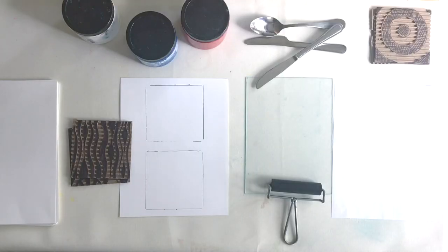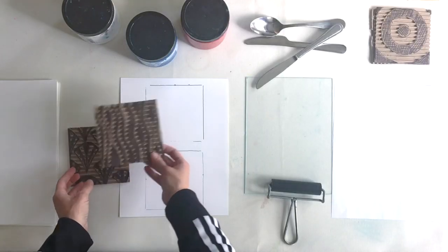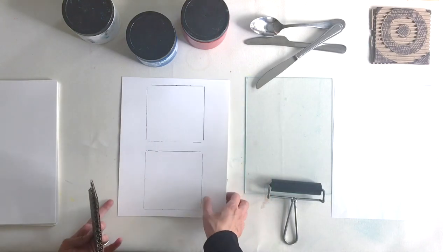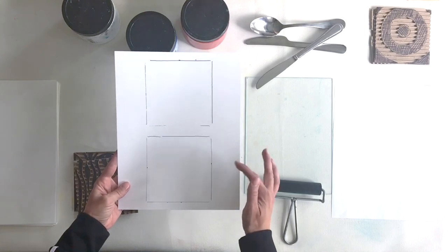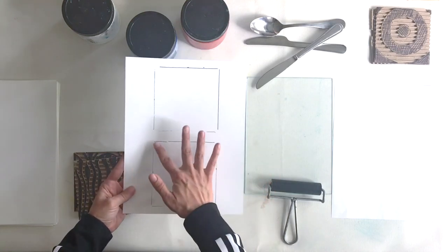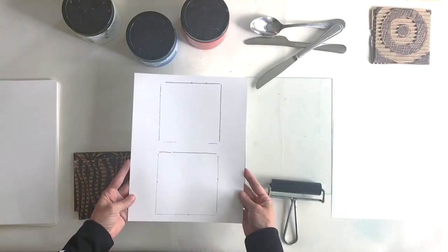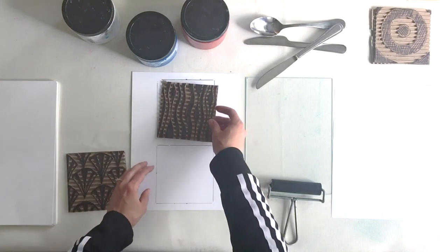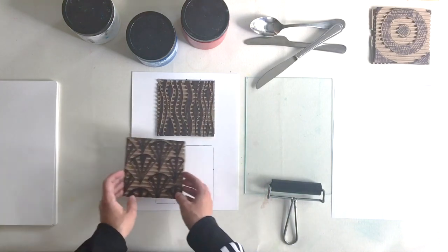Some things you'll need to print are your completed blocks, your registration template. I've traced around my blocks on a sheet of paper so that I can center them on the page when I print. You'll also need paper, ink, plexiglass, a brayer, and a spoon.